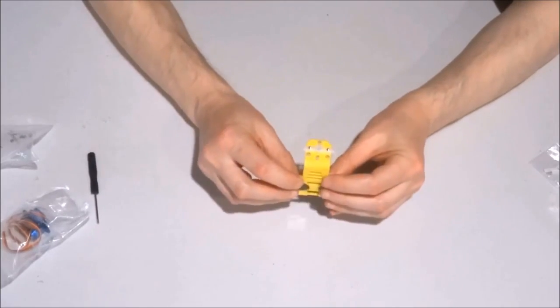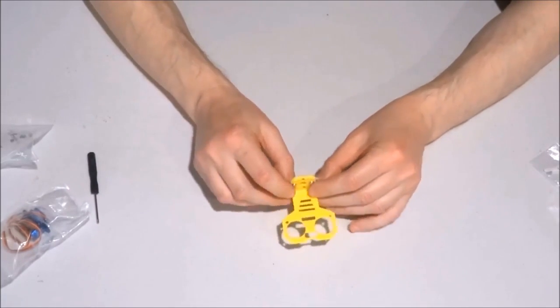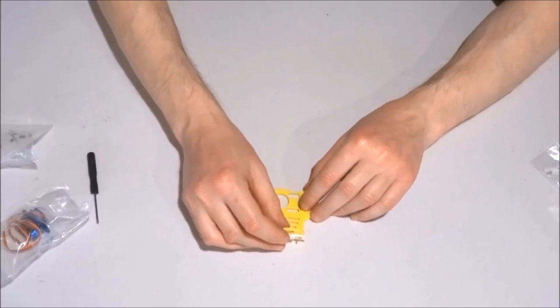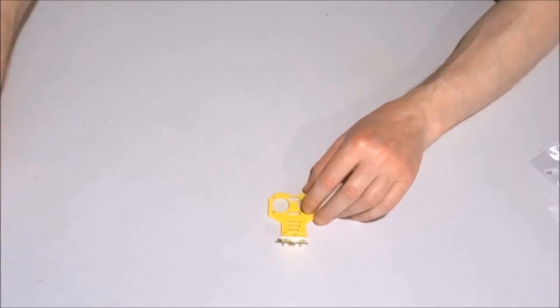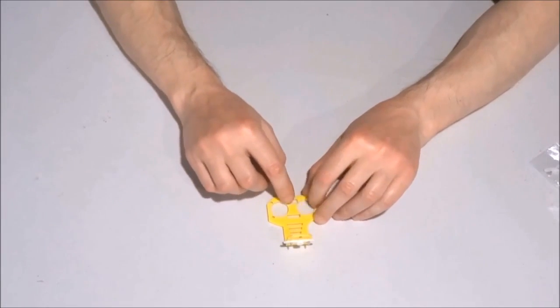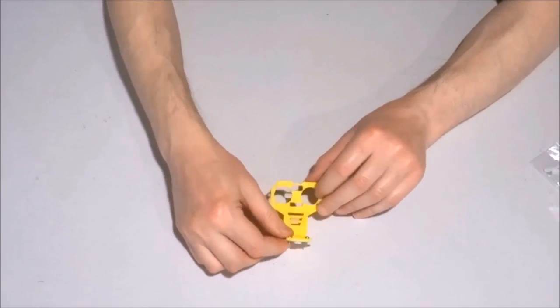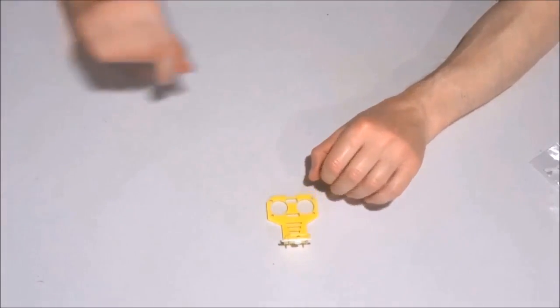So this is it - we have the seat placed properly on the mount. The next step would be to put the ultrasonic ranger and then mount the whole assembly on top of the servo.